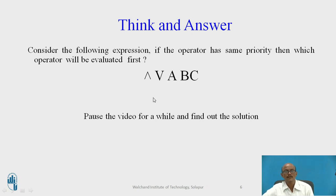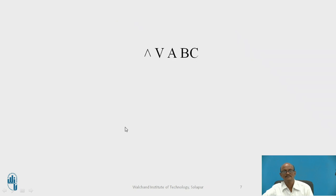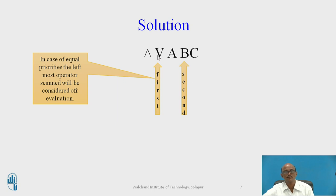Consider this question: take a pause in the video and give the answer. If operators have the same priority, which operator will be evaluated first? In the case of AND OR A B C, which operator will be evaluated? In the case of equal priorities, the leftmost operator will be scanned first and then evaluation will take place. So OR is first and AND is second.